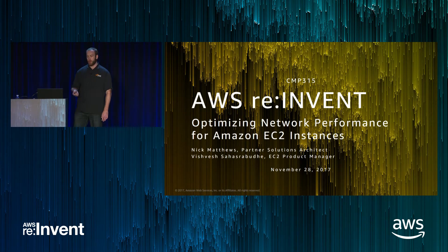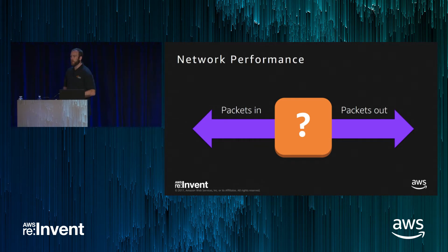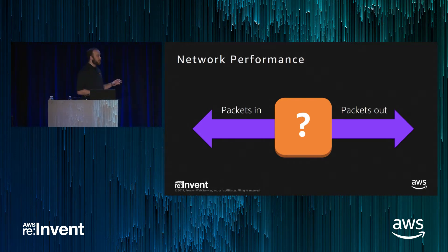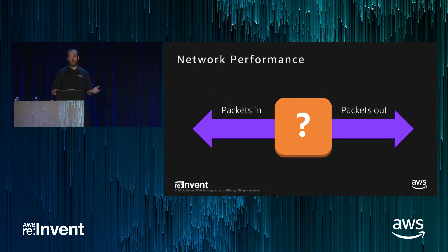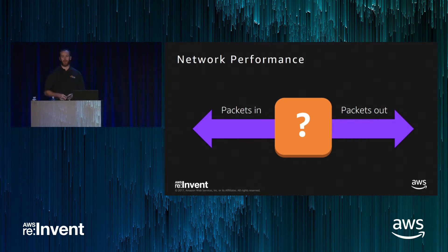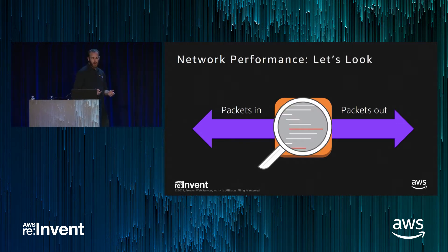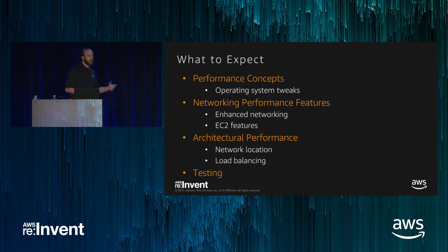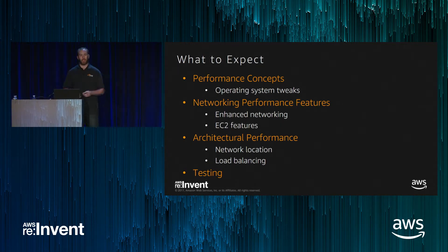I've been a network engineer for a while, and a funny thing about the cloud is that many AWS users don't understand networking deeply. Network performance is sometimes a dark art — packets come in, packets go out, and you're not sure where the bottleneck is. In the networking world we talk about 'mean time to innocence' — how do you prove it's not the network? We'll cover that for EC2 and AWS.